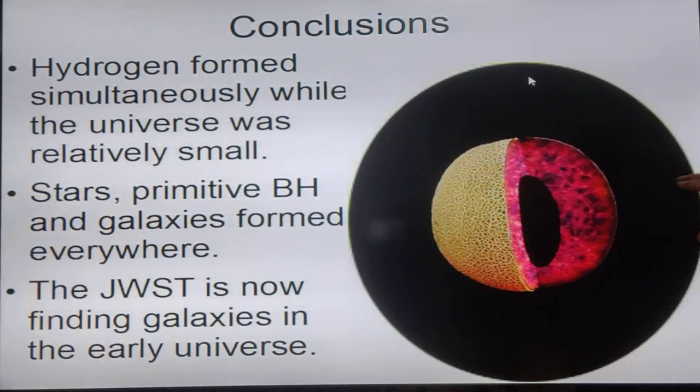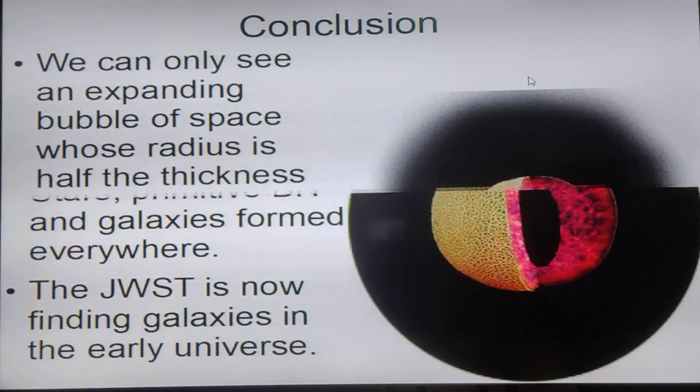When the hydrogen was formed in the universe, it formed everywhere simultaneously. And the universe was very small at the time. So stars and primitive black holes and galaxies formed everywhere pretty much simultaneously. And that's why the James Webb Space Telescope is now finding galaxies in the early universe, because they all formed pretty much at the same time.